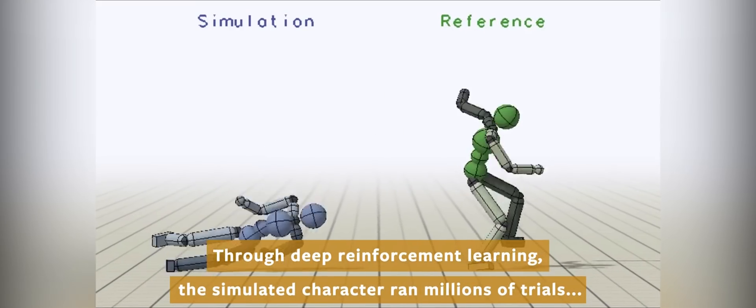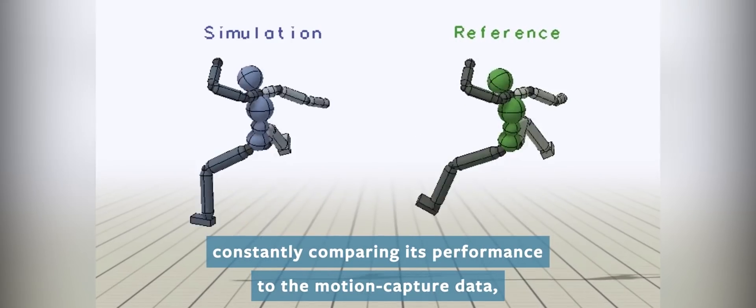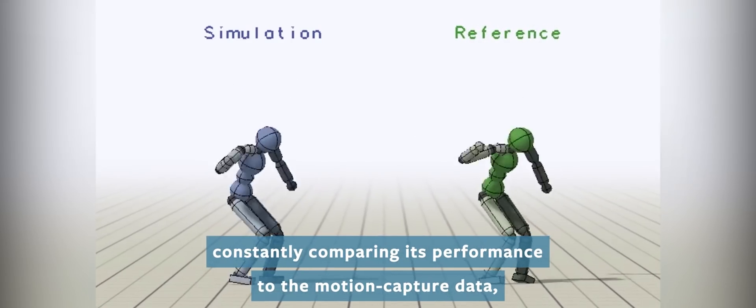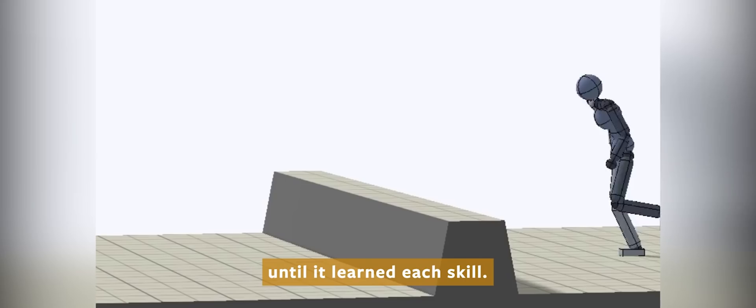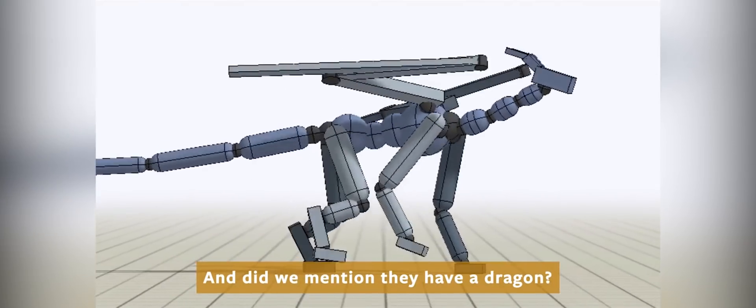What's even more fascinating about this is, again, because the AI has learned its movement instead of being told what instructions to execute, it can transfer this knowledge to non-human models. Apparently they have gotten lions, a T-Rex, and yeah, even a bloody dragon working with this.